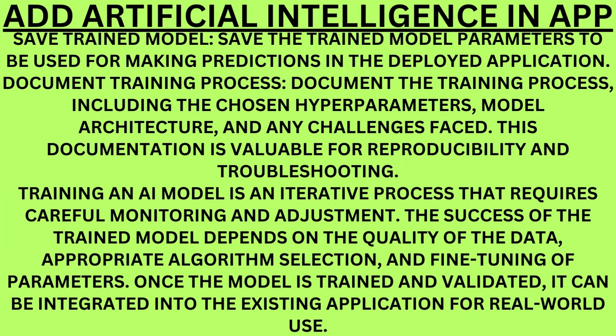Save trained model. Save the trained model parameters to be used for making predictions in the deployed application. Document training process. Document the training process including the chosen hyperparameters, model architecture, and any challenges faced. This documentation is valuable for reproducibility and troubleshooting. Training an AI model is an iterative process that requires careful monitoring and adjustment. Once the model is trained and validated, it can be integrated into the existing application for real-world use.